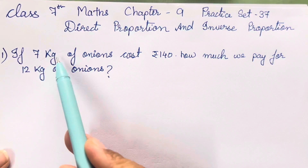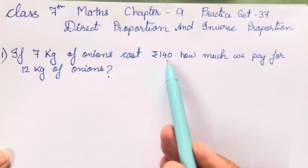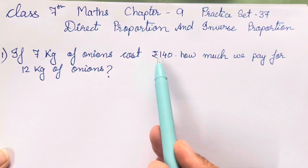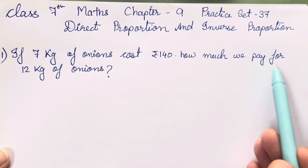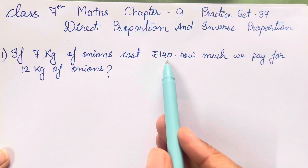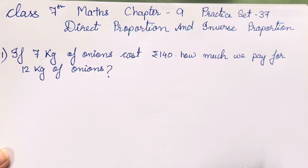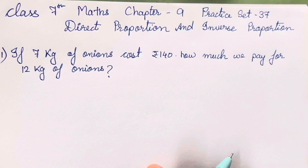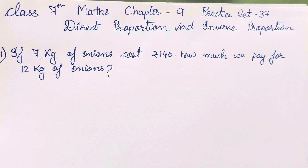So in this, see: 7 kgs of onion cost rupees 140. So the 7 kg amount has been given. How much do we pay for 12 kgs? So 7 kgs amount has been given, and 12 kgs of onions we need to find the answer for. When such a problem is given, we have to use direct proportion.